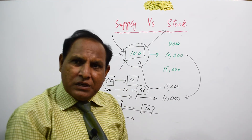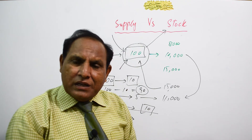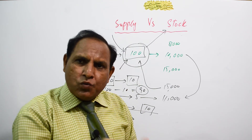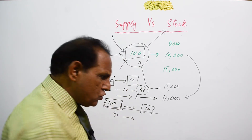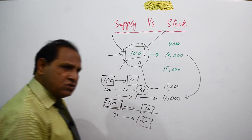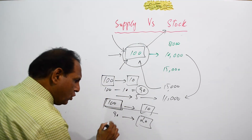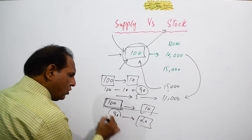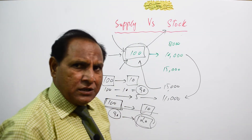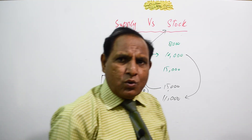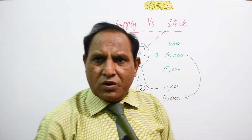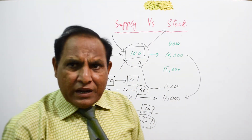When I have sold those 10 mobiles, now 90 mobiles are left in my shop — so now the stock is 90. And from those 90, suppose I am going to sell 20 mobiles — so the stock is 90 and the supply is 20. Dear students, this was the difference between stock and supply.